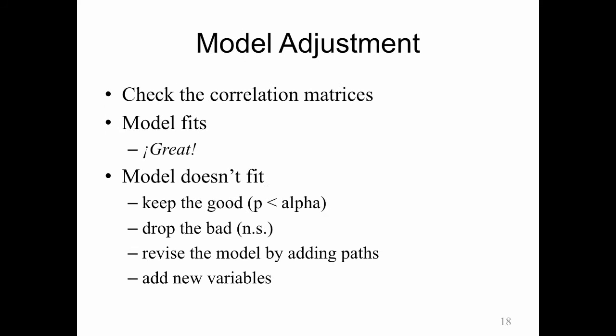The last thing from path analysis is the idea of model adjustment. So once you've checked your correlation matrix for your data and the correlation matrix for your model, then you ask, does the model fit? If it fits, we're done. We can stop. If it doesn't fit, then we ask, what things were significant? We'll keep those. We'll consider getting rid of the stuff that's not significant. We may revise the model, meaning we'll actually add paths. Because remember, the stuff that's not there is there. It's just zero. We'll just make it not be zero.